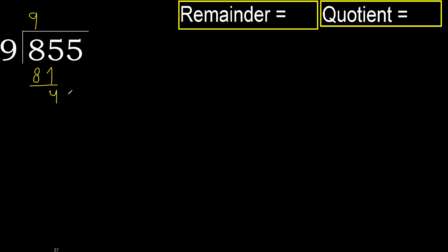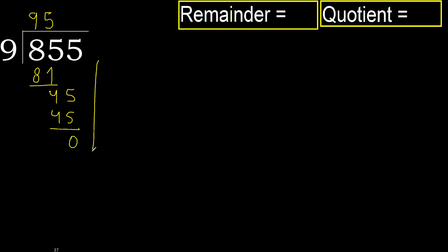Next, bring down 45. 9 multiplied by 6 is greater, so multiplied by 5: 45 is not greater. Subtract — 45 minus 45 is 0.